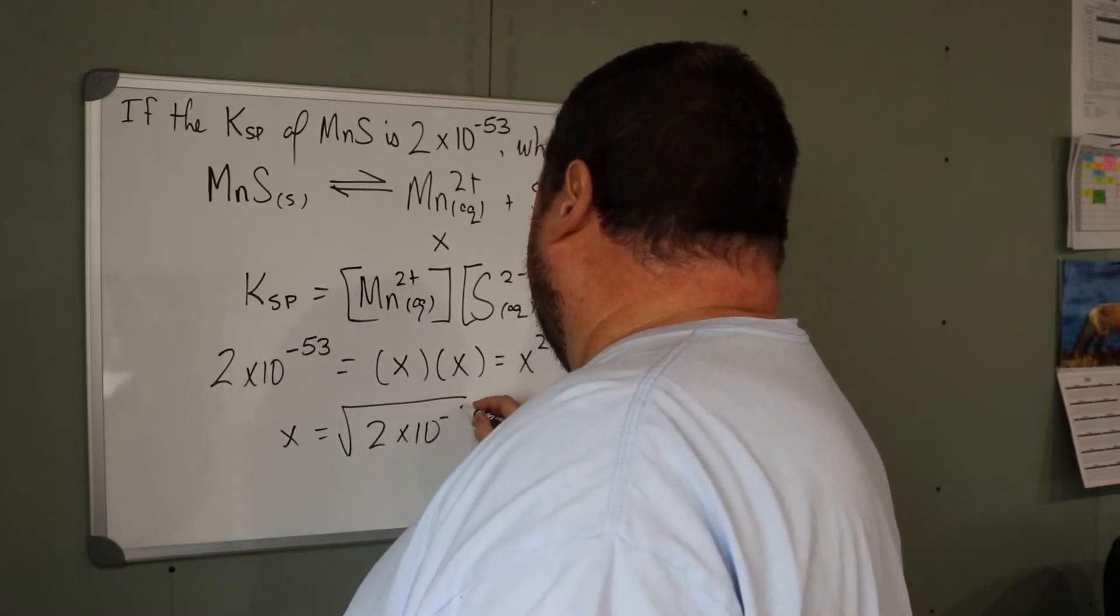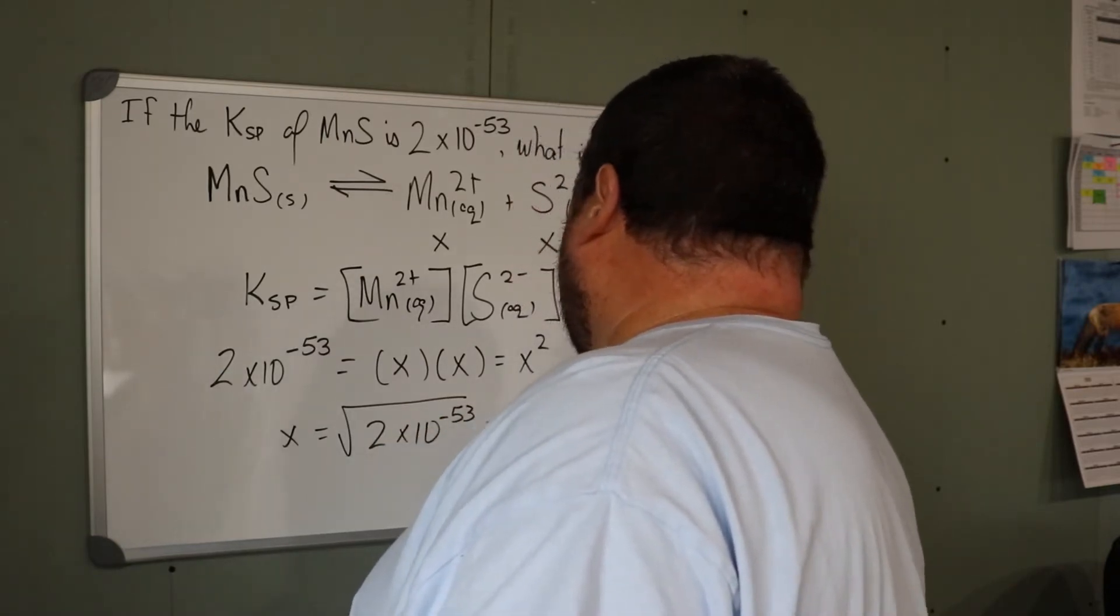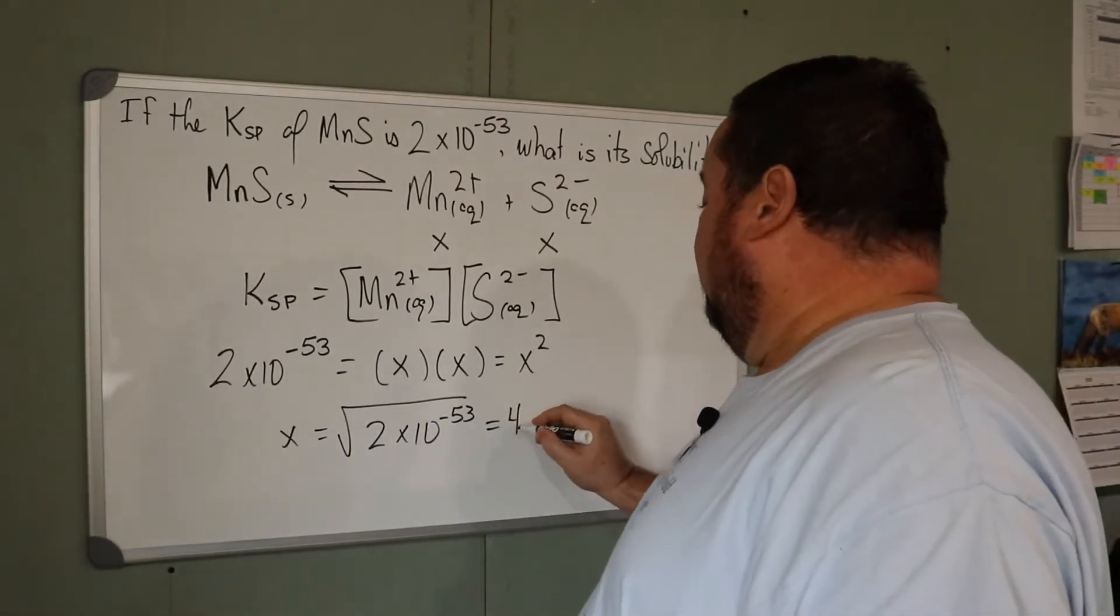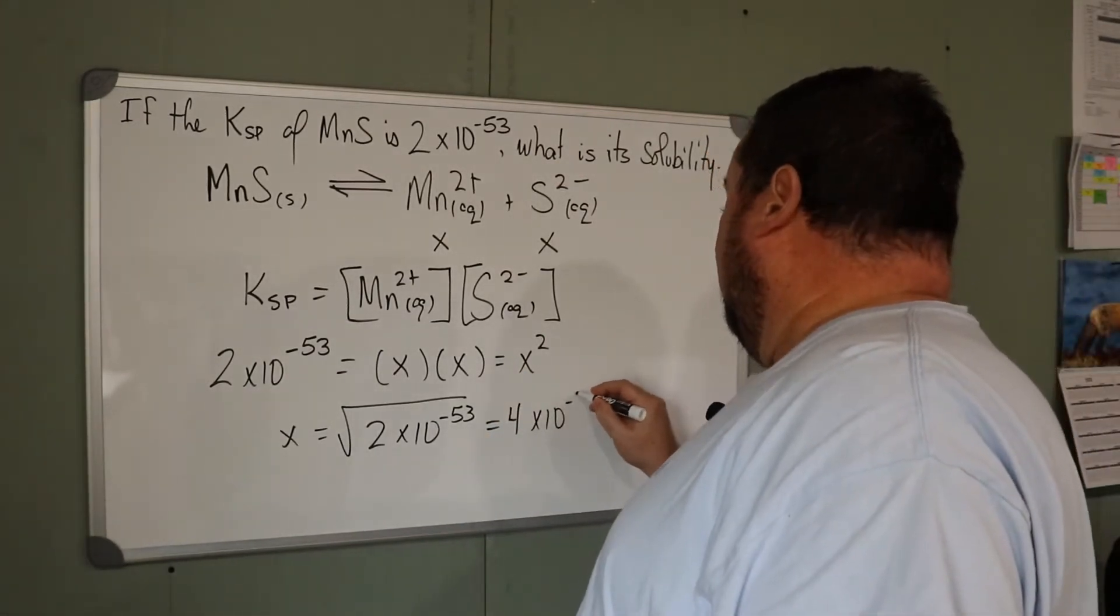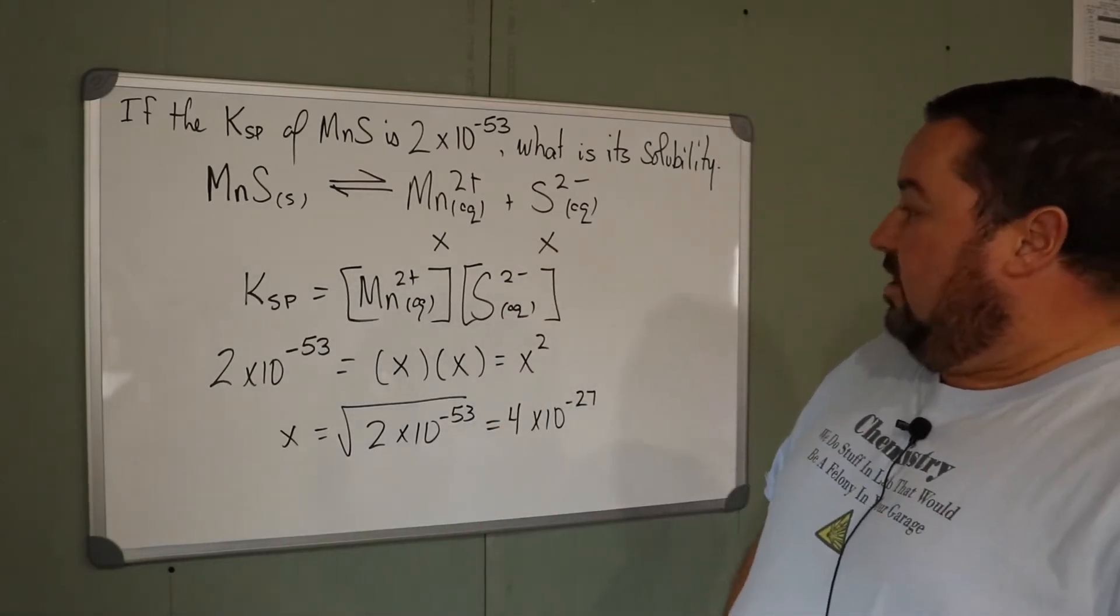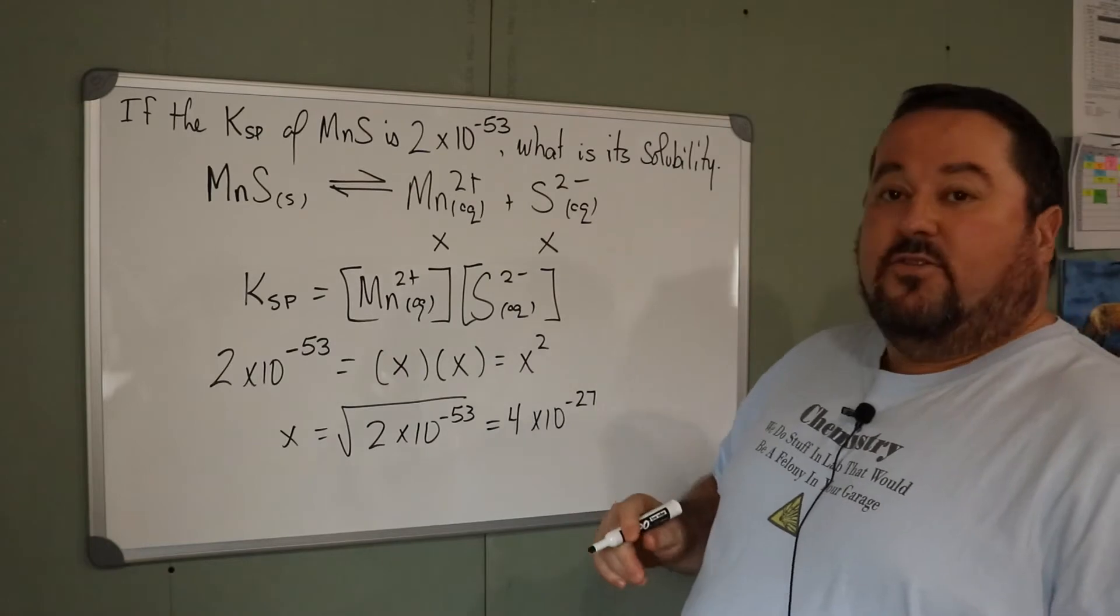So to solve this, X is the square root of 2 times 10 to the -53, or 4 times 10 to the -27. So that is the molar solubility of the manganese(II) sulfide.